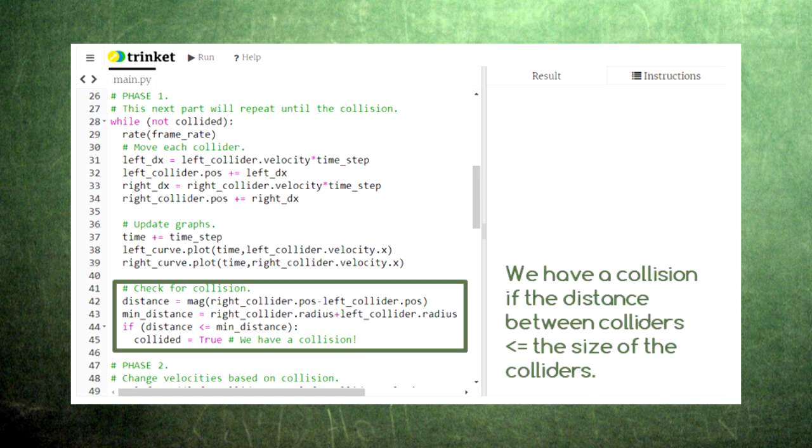Then, we check for a collision by comparing the distance between the two colliders with the size of the two colliders. Once the two colliders touch in the animation, the variable collided is set equal to true and the code will exit the animation loop.